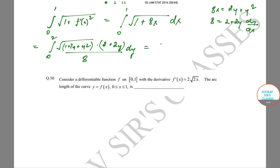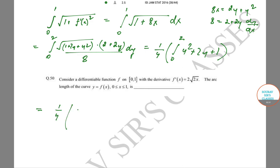This gives us (1/4) times the integral from 0 to 2 of (y² + 2y + 1) dy. Note that y² + 2y + 1 is a perfect square: (y + 1)². So we have √(y + 1)² = (y + 1) from the root, and (y + 1) from the other side, giving (y + 1)².